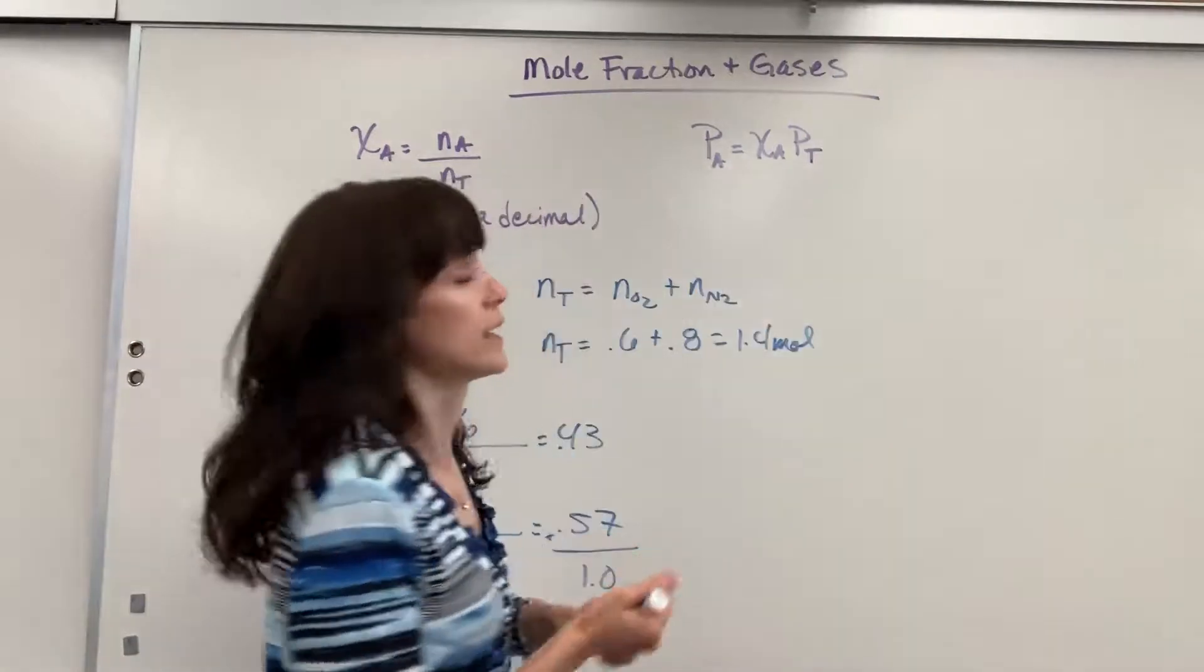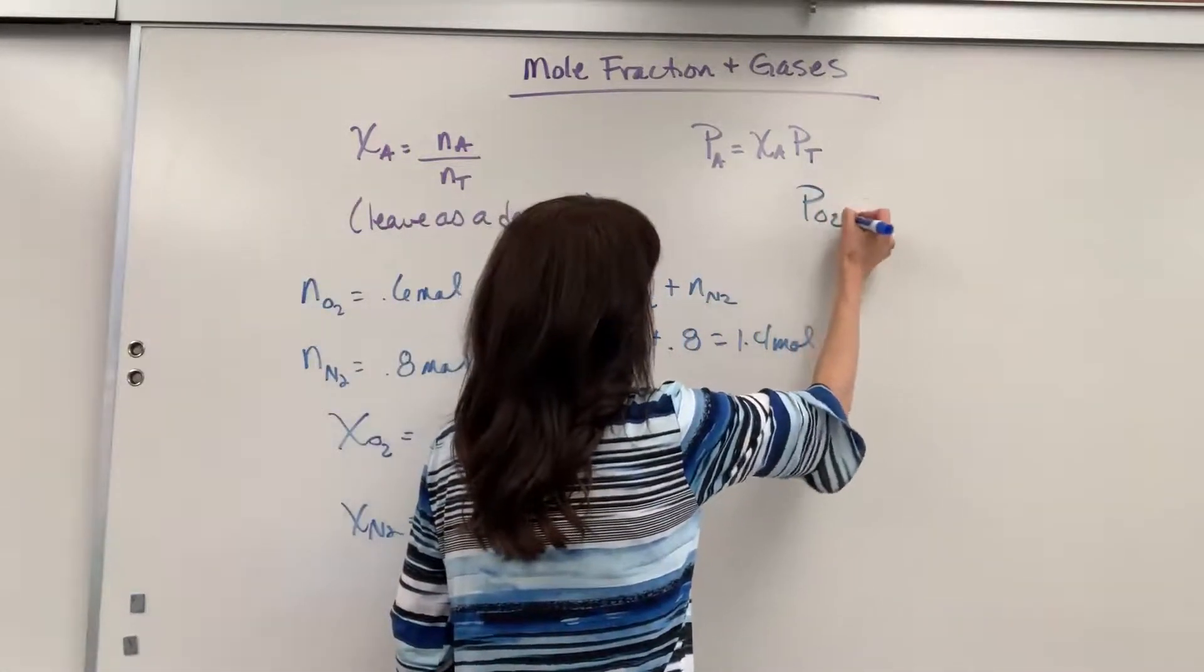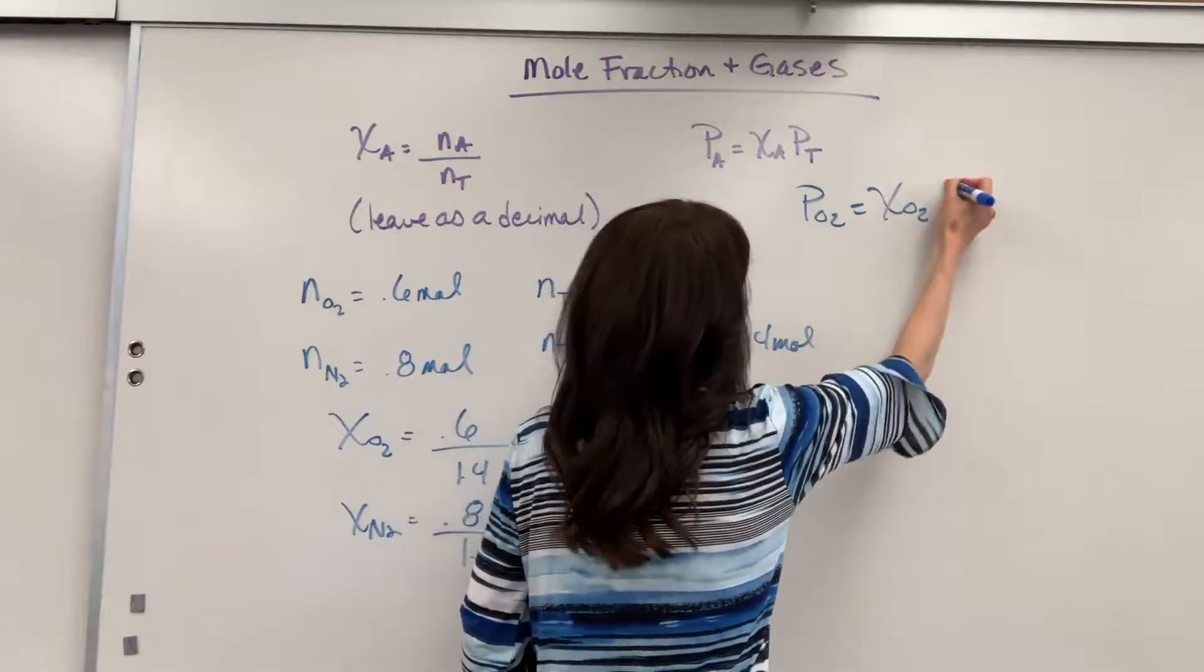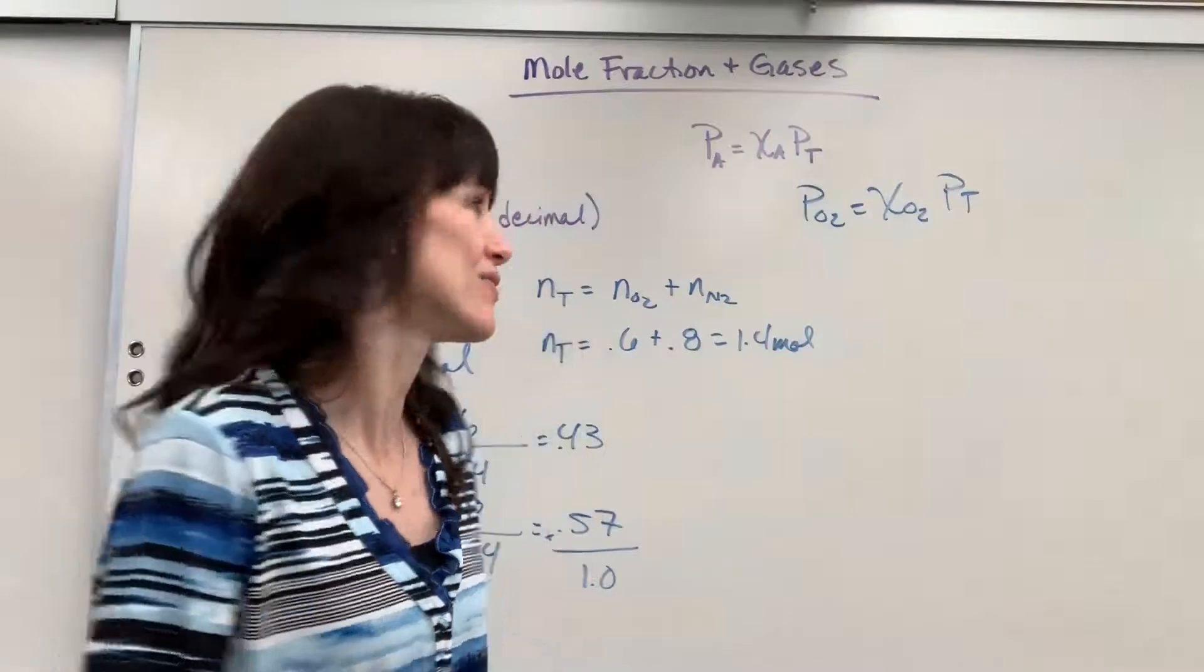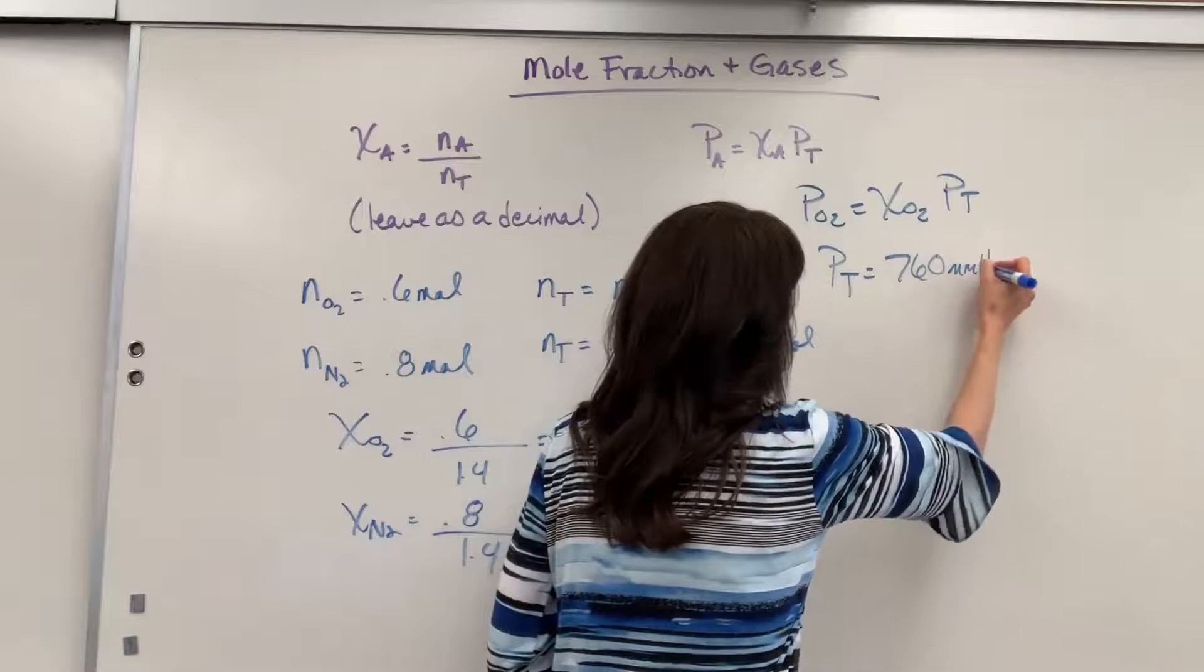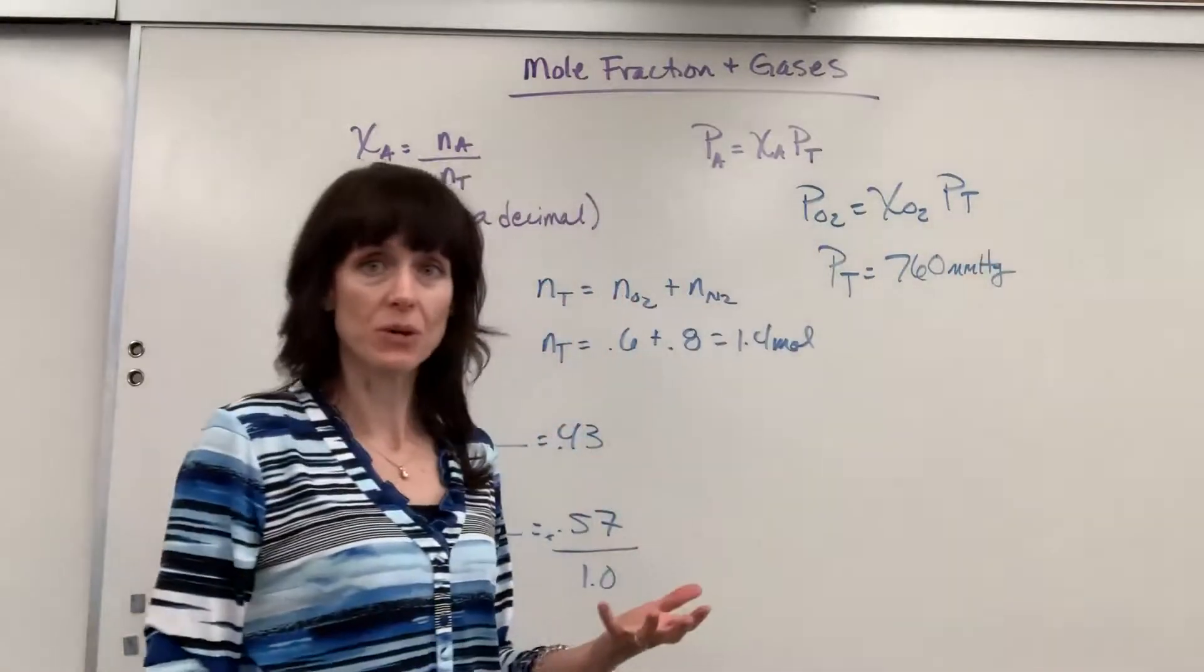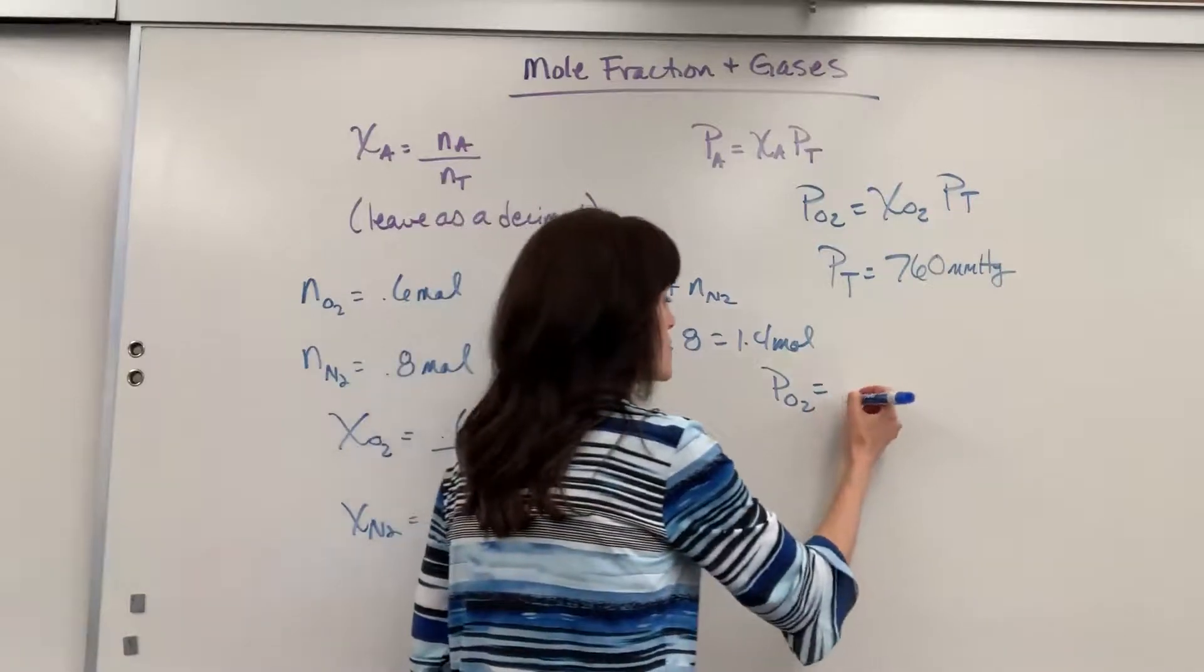So let's say that I want to find the pressure of oxygen. Partial pressure of oxygen is going to be mole fraction of oxygen times the total pressure. Let's pretend that we're at San Diego, we're sea level, and that the total pressure equals 760 millimeters of mercury.